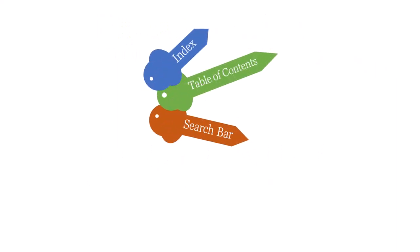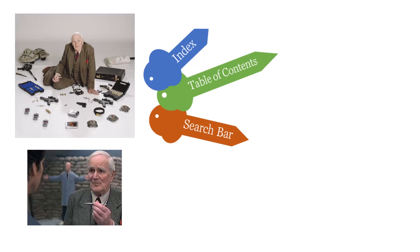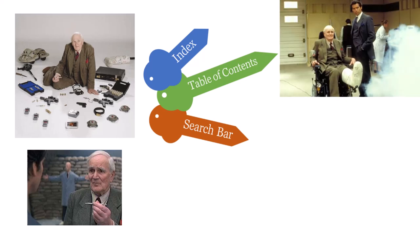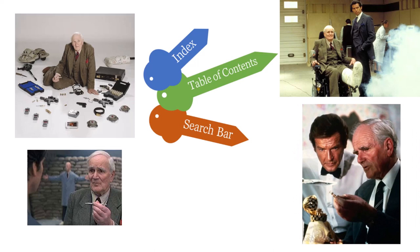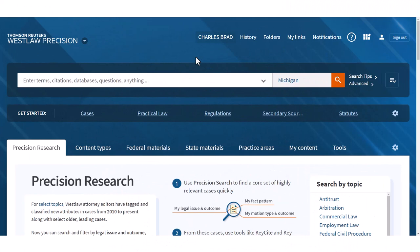In James Bond movies, there's a character named Q — which stands for quartermaster — who gives James Bond cool gadgets at the beginning of the movie. Inevitably, Bond uses each and every one of those gadgets. You don't want to be a Bond who doesn't use one of Q's gadgets. That relates to research, where we have the index, table of contents, and search bar — these are techniques you can use to quickly and efficiently understand a topic and dive into secondary sources.